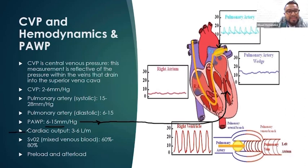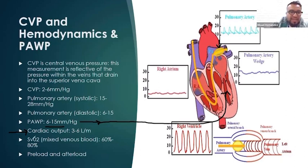Cardiac output is the volume coming out of your left ventricle every minute — usually 3 to 6 liters per minute. SVO2, or mixed venous blood, describes demand versus what we actually have, and it's 60 to 80%.